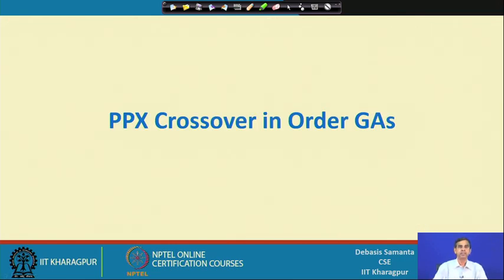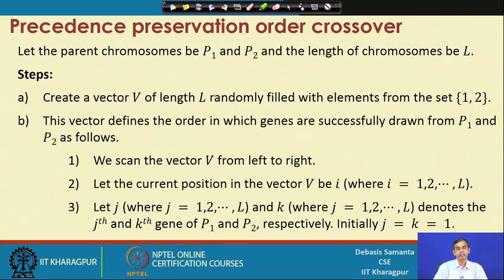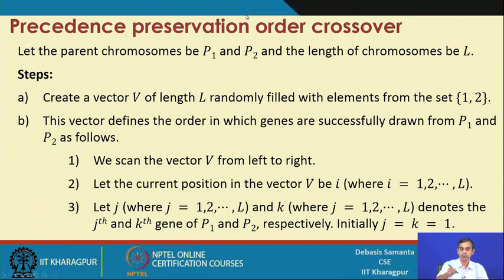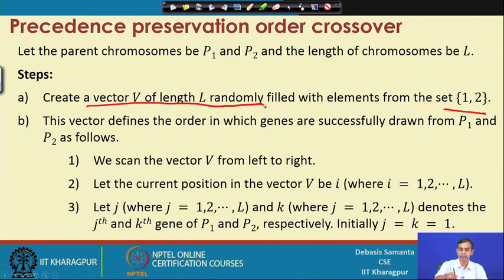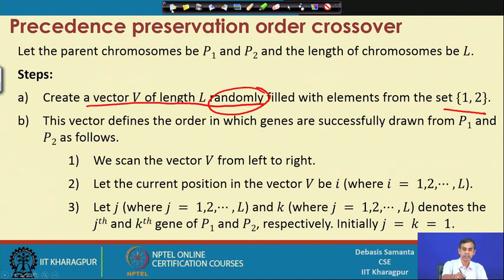Next we discuss the Precedence Preservative Crossover (PPX) technique in order GA. As with the earlier techniques, we follow two parents P1 and P2 of length L. PPX considers one vector V of the same size as the chromosome length L, randomly created with constituents of either 1 or 2. This vector is called a pivot and acts like a mask, similar to the half-uniform crossover in binary-coded GA.